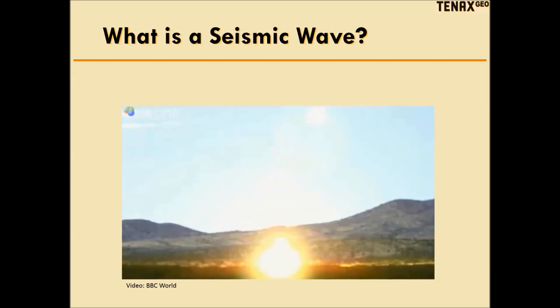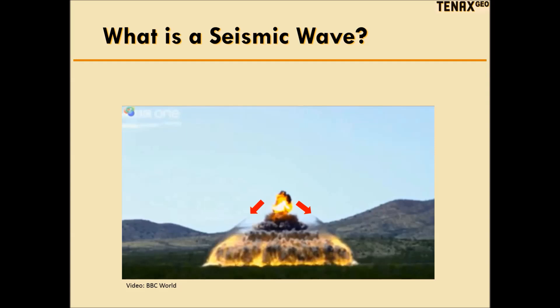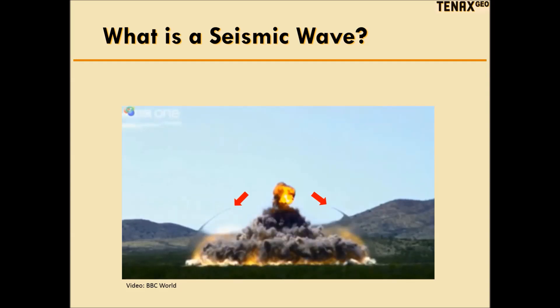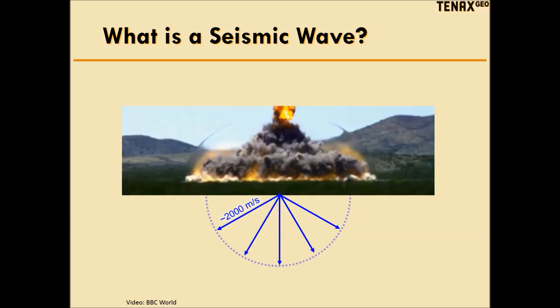Here's a video capture of a large dynamite explosion taken with a high-speed camera. In a later frame, you can see the explosion mushrooming upward and outward, but notice the strange disturbance highlighted with red arrows. As I move to a later frame, it's clear that the disturbance is not part of the fireball — it's actually a supersonic shockwave moving at about 6,900 meters per second, which is the known speed of a TNT explosion. The shockwave expands away from the explosion in the shape of a sphere.